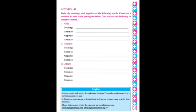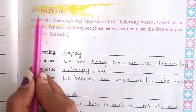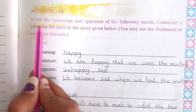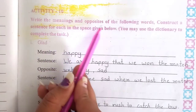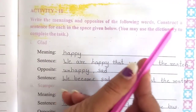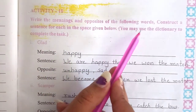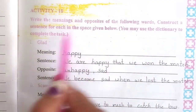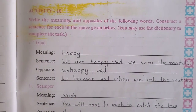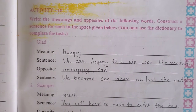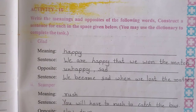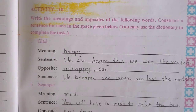Now let's move to the next page — page number 117. Activity 10. Write the meanings and opposites of the following words and construct a sentence for each in the space given below. You may use the dictionary to complete the task. यहाँ पर कुछ words दिये गए हैं — उन words के meanings और opposite words आपको लिखने हैं और एक sentence भी उसके बारे में बनाना है.